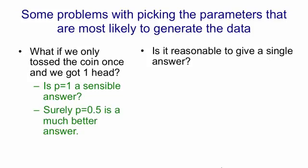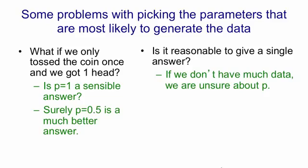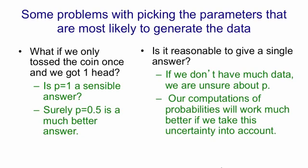More importantly, we can ask, is it reasonable to give a single answer? We don't know much, we don't have much data, and so we're unsure about what the value of p is. So what we really ought to do is refuse to give a single answer, and instead give a whole probability distribution across possible answers. An answer like 0.5 is fairly likely. An answer like 1 is maybe still pretty unlikely if we have some prior belief that coins come down heads half the time.